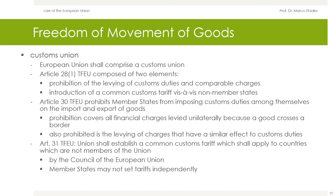According to Article 28 TFEU, the European Union shall comprise a customs union, composed of two elements: the prohibition of the levying of customs duties and comparable charges, and the introduction of a common customs tariff vis-à-vis non-member states. Article 30 TFEU prohibits member states from imposing customs duties among themselves on the import and export of goods. This prohibition covers all financial charges levied unilaterally because a good crosses the border, thereby increasing its price. Also prohibited is the levying of charges that have a similar effect to customs duties — this is the case if the levy causes a foreign good to be more expensive than a domestic good.